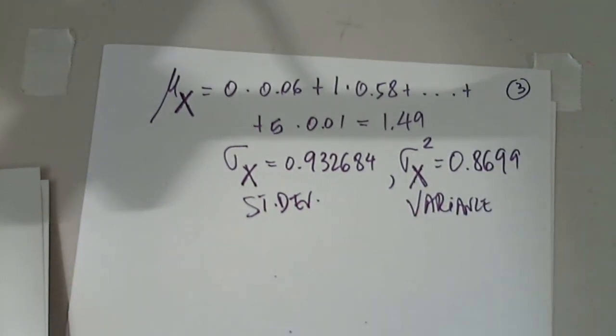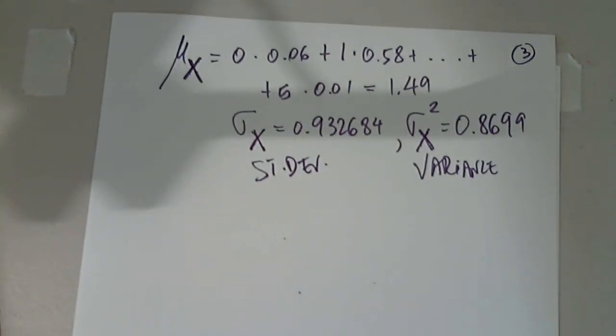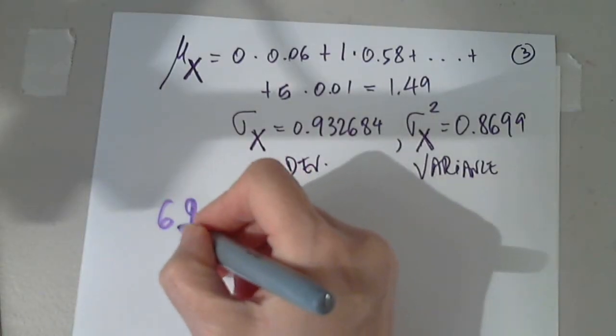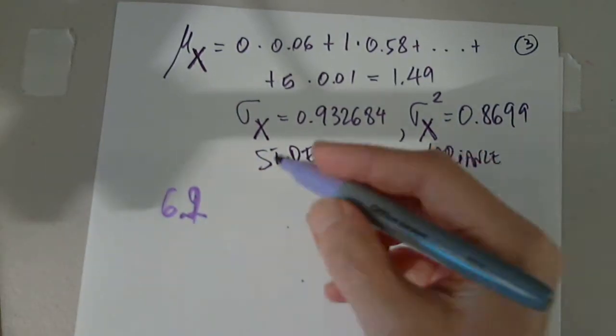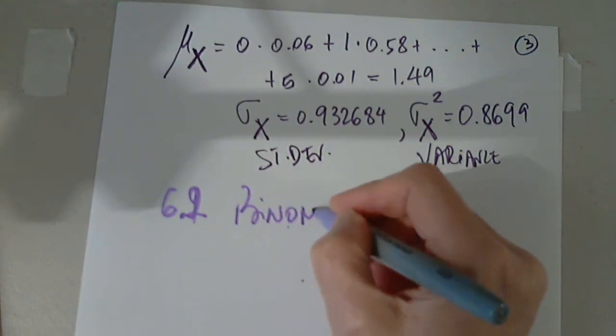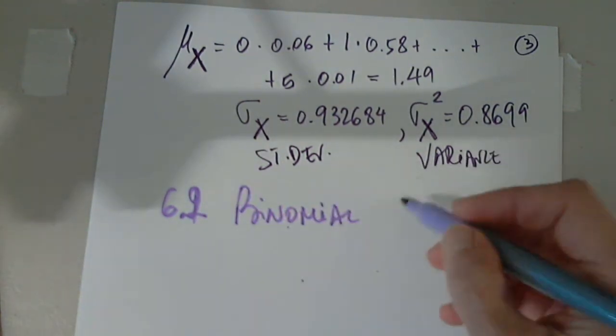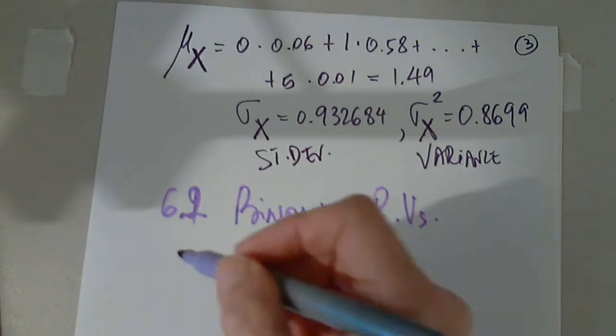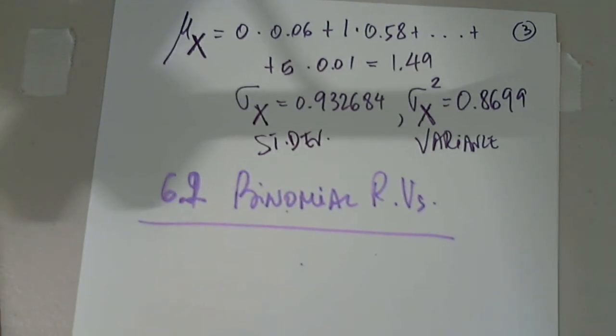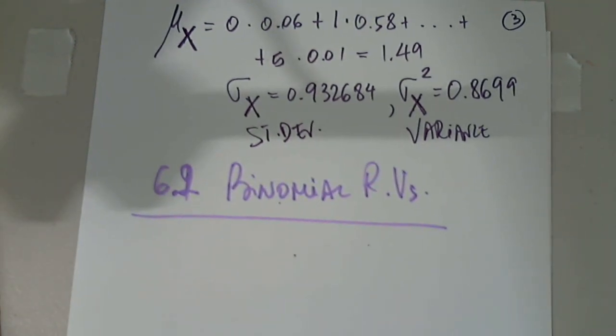We are ready to move on to binomial random variables. Any questions for me? Okay. Last section before our midterm. 6.2, of course. Binomial random variables.